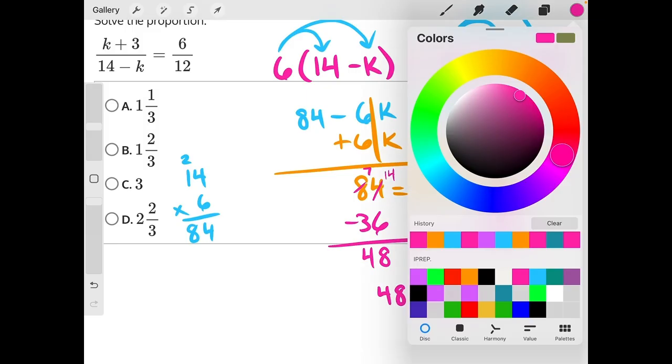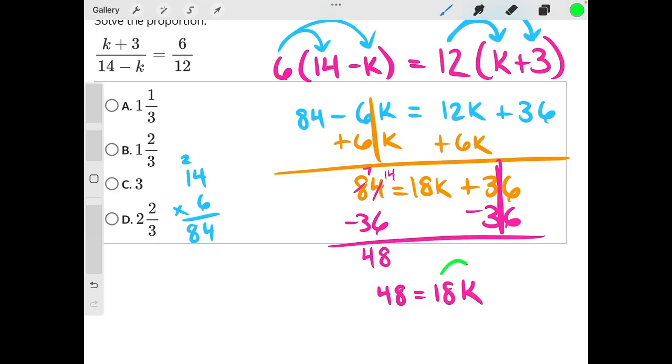Now the final step: 18 is being multiplied to k, so the opposite is dividing both sides by 18. This is not going to be an even division.